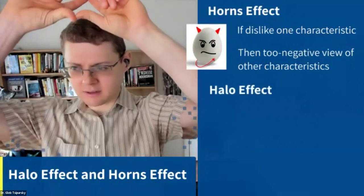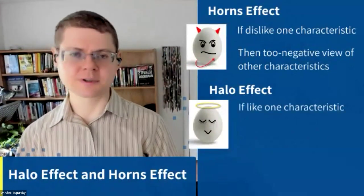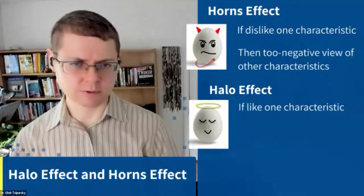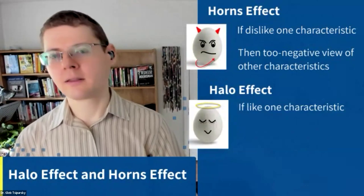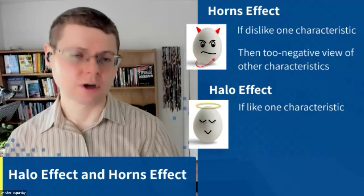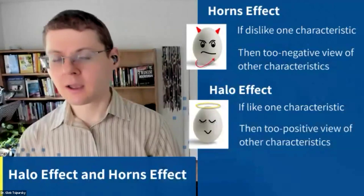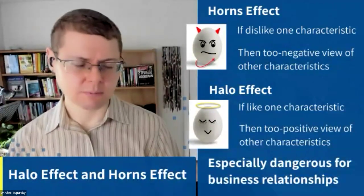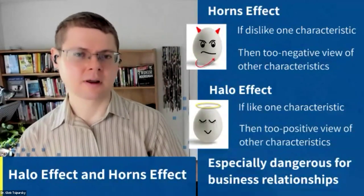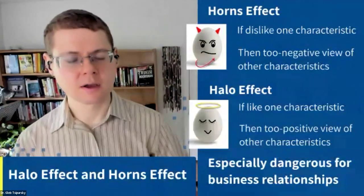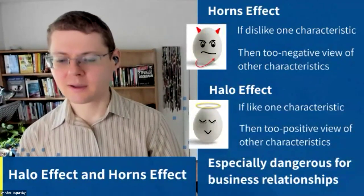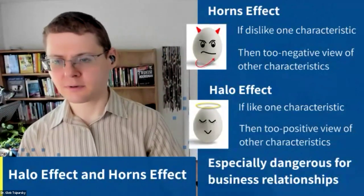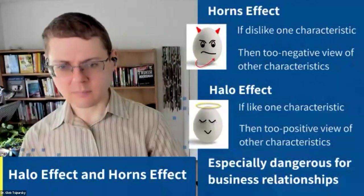If someone has one characteristic that makes it feel like they're not part of your tribe, you'll tend to have negative views of their other characteristics. The halo effect is the opposite — it's like someone has a little halo. If you share a characteristic with another person that's different from those around you — for example, if you're from Mississippi and moved to Illinois with a southern accent, and you meet somebody else with a southern accent — you'll tend to trust that person more than they deserve. If you like one characteristic, you'll have positive views of their other characteristics. It's especially dangerous for business relationships. You'll definitely see this in dental practice where people have challenges with others different from them and alignments with people similar to them, even though that might not be the right decision-making.